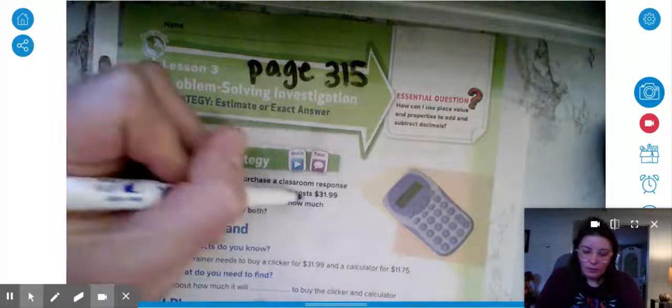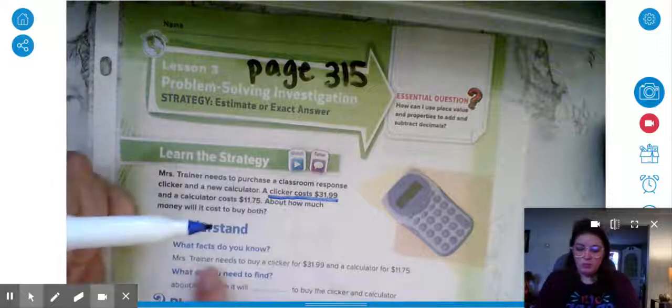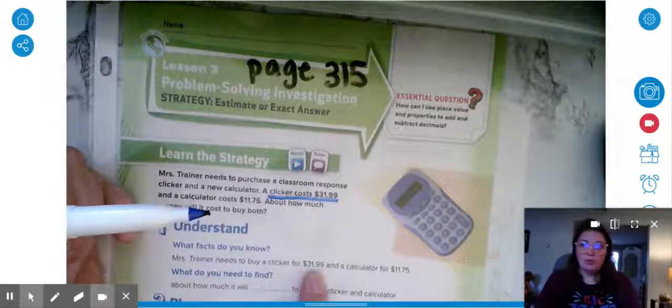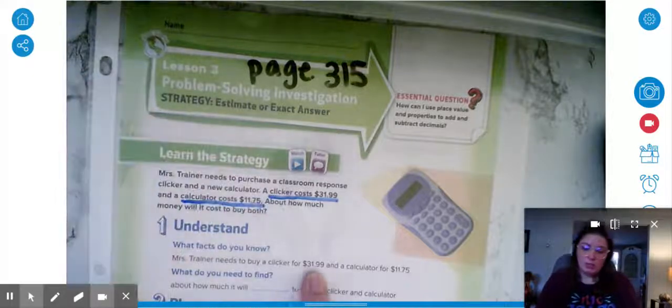Well a new clicker costs $31.99, so she needs to buy a clicker for $31.99, and a calculator costs $11.75.